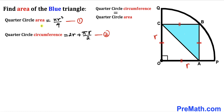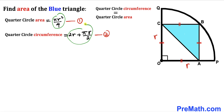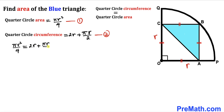We now have the quarter circle area and the quarter circle circumference. Since they are equal, we equate the two equations: πr²/4 = 2r + πr/2.